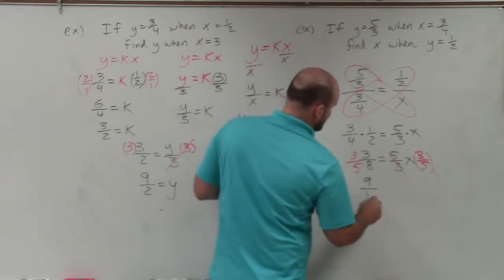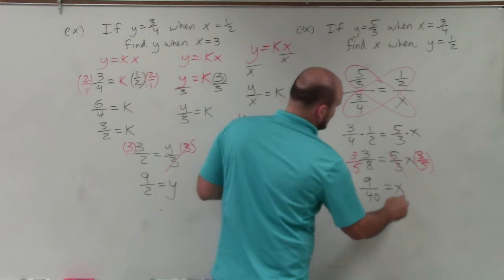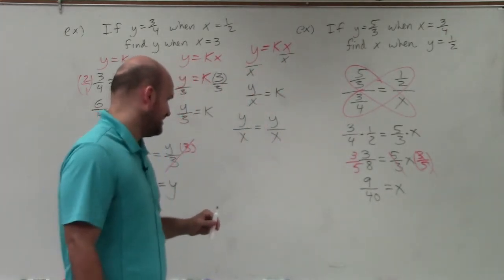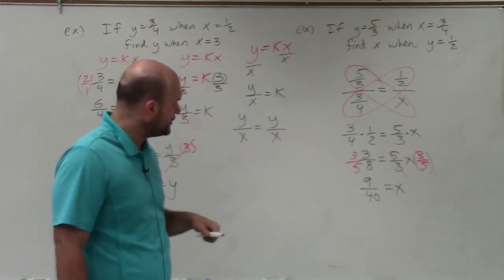And what I get is 9 over 40, which equals x. And I look at that, and I see, can I simplify that at all? And no, 3 does not go into 40.